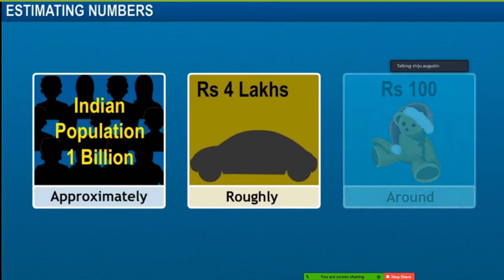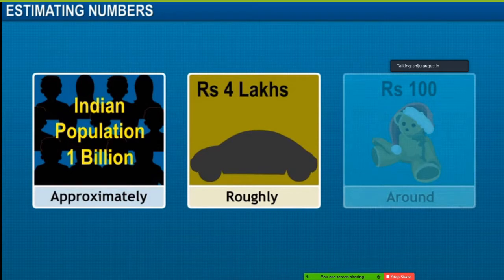For example, the population of India is approximately 1 billion. The cost of a standard family car is roughly 4 lakhs. These toys will cost around 100 rupees. These words are used when estimates of quantities are stated.